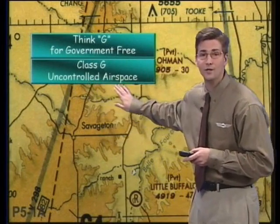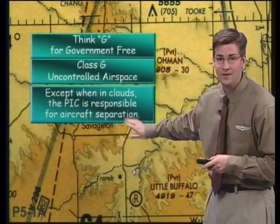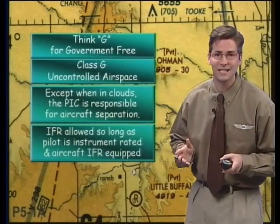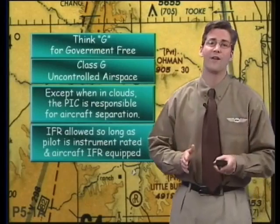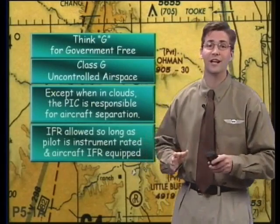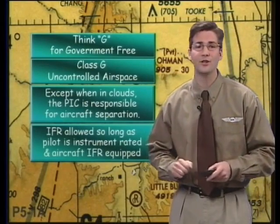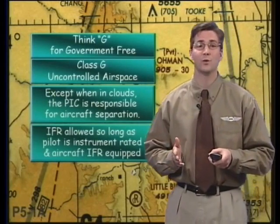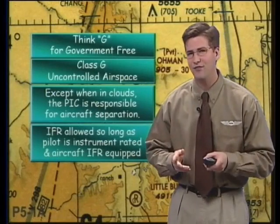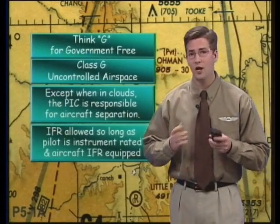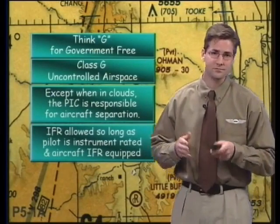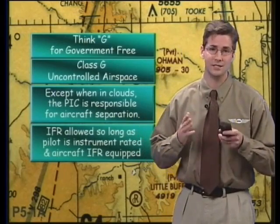Class G airspace is uncontrolled airspace, meaning ATC has neither the authority nor the responsibility for control of traffic flying in this area. Therefore, the PIC always has the responsibility to see and avoid other traffic. You can fly IFR in class G airspace and you do not even need a clearance because it is uncontrolled airspace. However, because class G airspace is often very close to the ground, operating IFR here with or without a clearance would be dangerous because there would really be little margin for error before hitting something. Except for a few places in the West where class G airspace extends into the higher altitudes, IFR flights transitioning through class G airspace are usually doing so for the purpose of takeoffs or landings at an airport. Therefore, most class G airspace is used by VFR pilots.